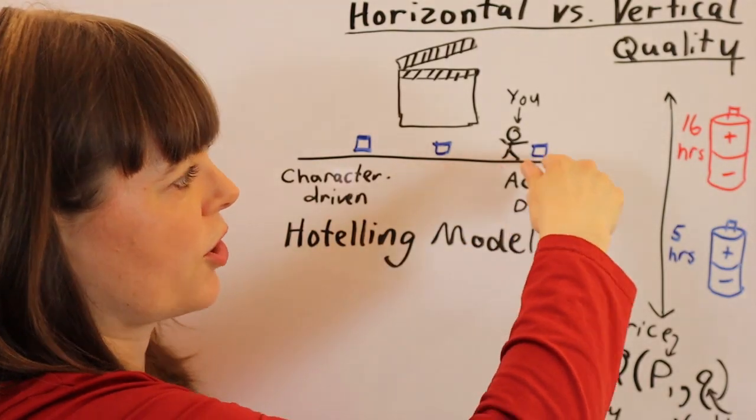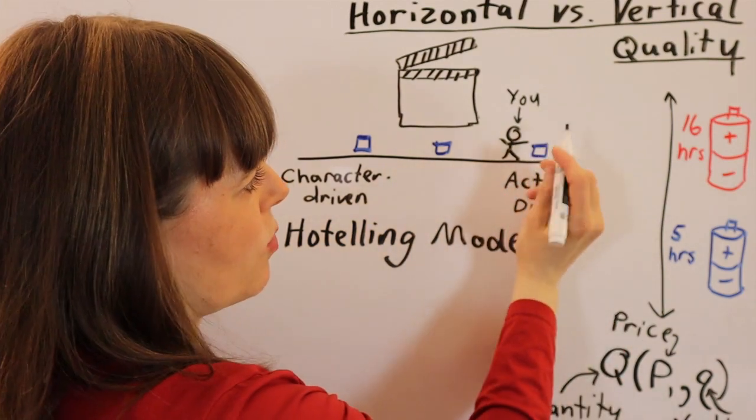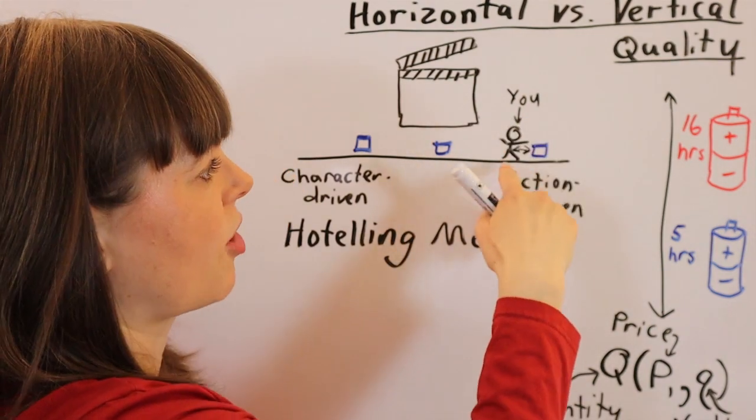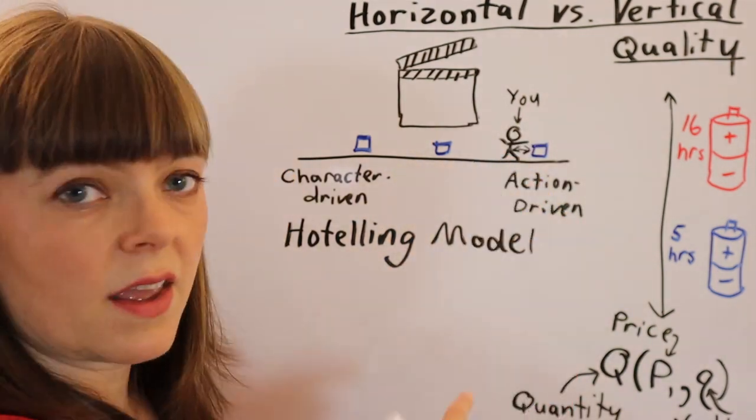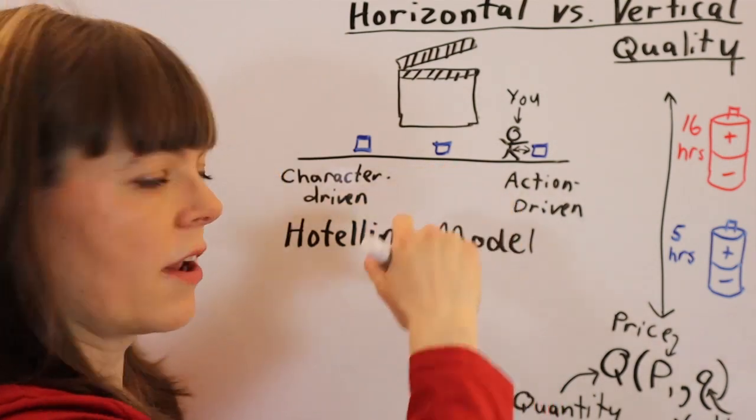You'll go to the product that's closest to you on the spectrum. The way I've drawn these three, there's a movie that's really close to your optimal point on the spectrum, and the movies over here are only going to glean from the population over here.